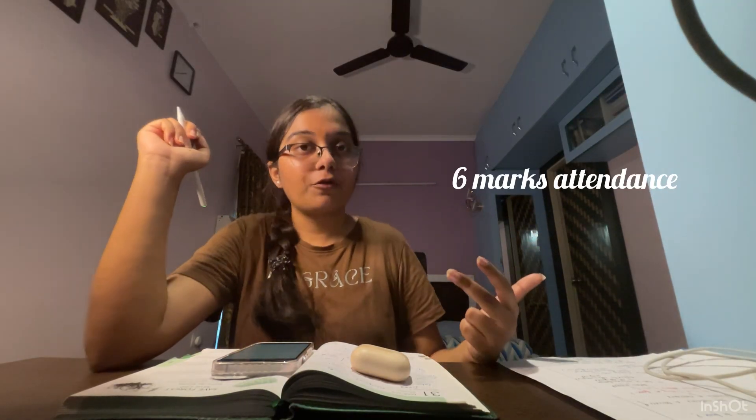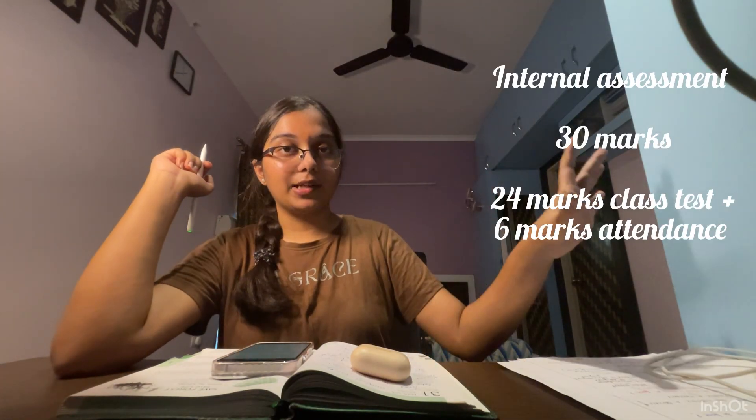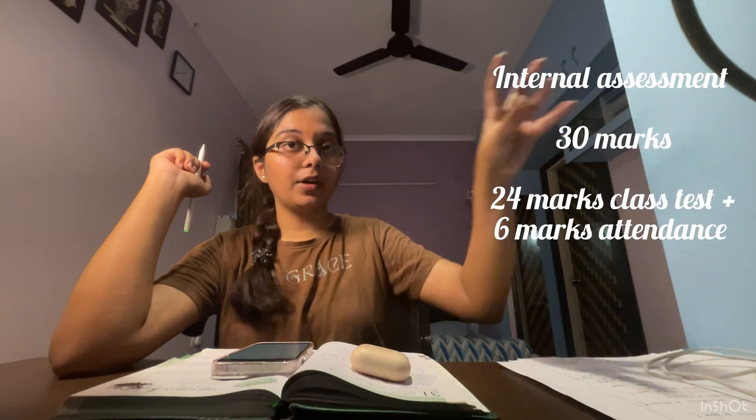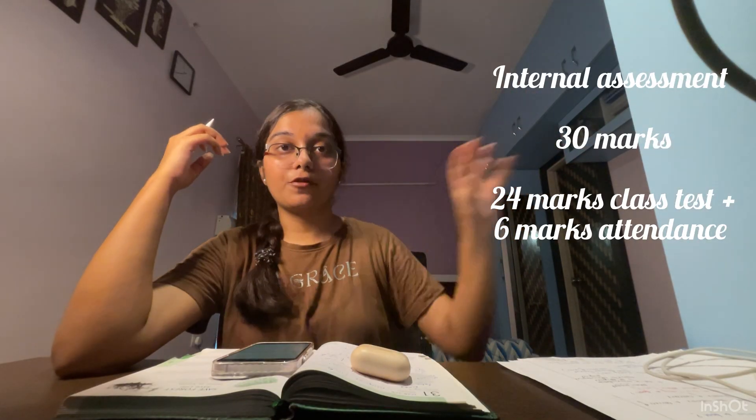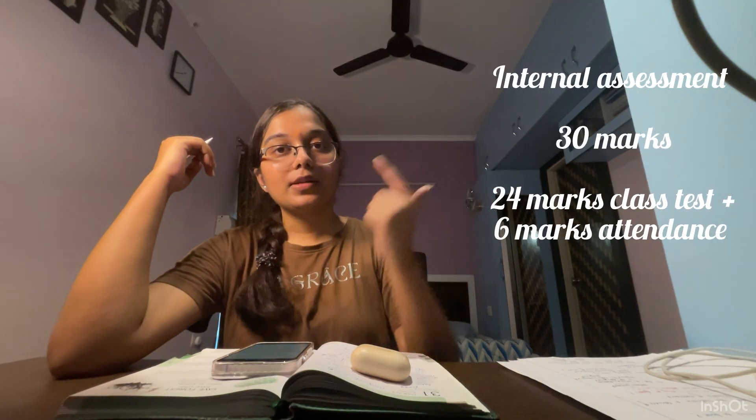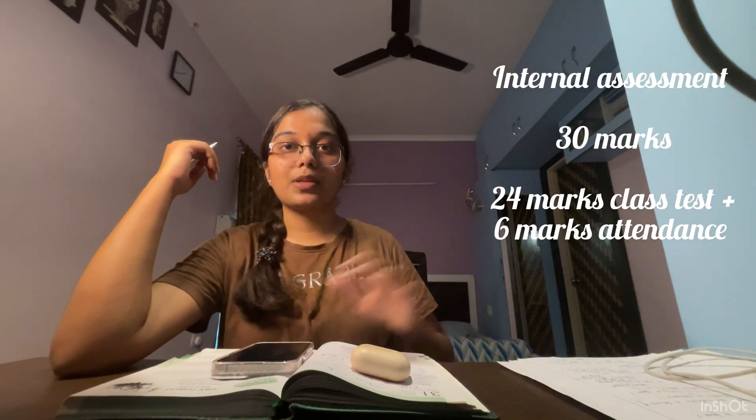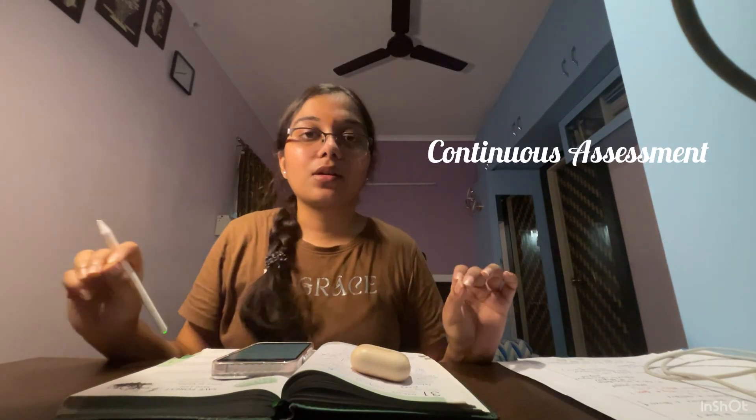The remaining 6 marks of the internal assessment are for attendance. Students with 85% or above attendance get full 6 marks, and the score decreases below that. Below 69% attendance you get zero marks. So attendance also carries marks — you need to keep that in mind. This sums up the internal assessment: 12 + 12 + 6 = 30 marks.